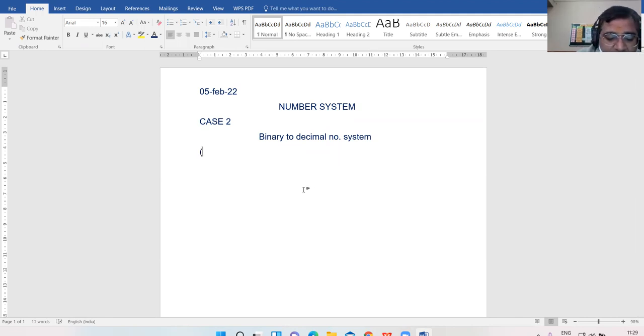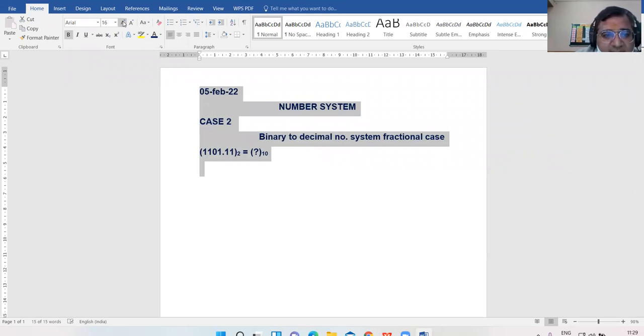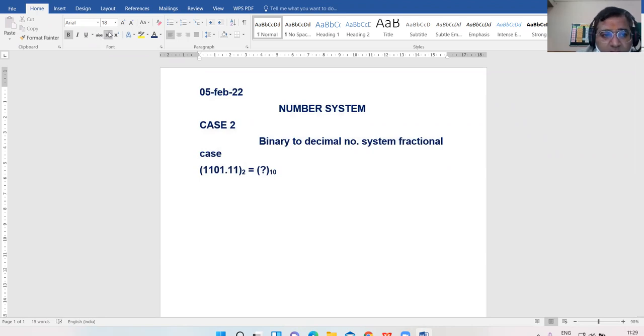I have one example now: 1101.11 to the base 2 to be converted to decimal. This is the fractional case. So when we have the fractional case 1, 1, 0, 1 point 1, 1.